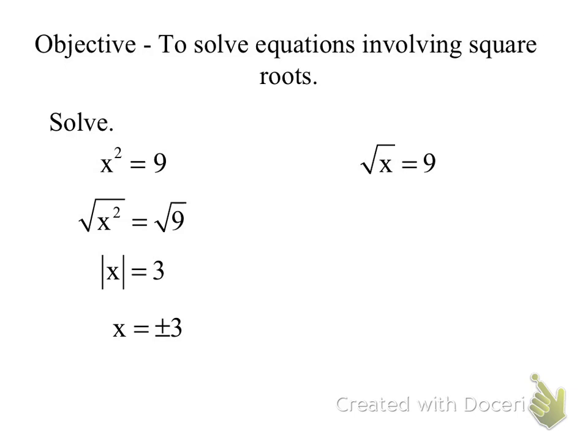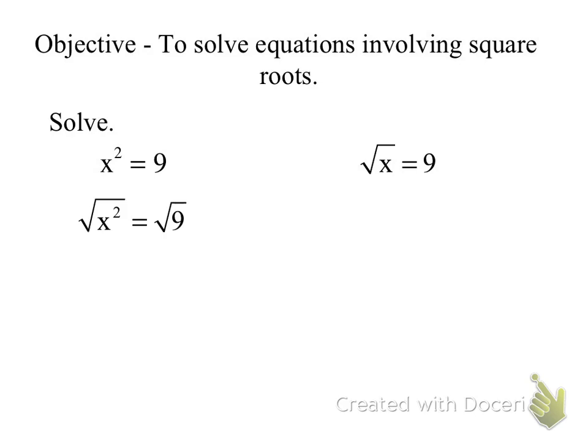Let me go back over it. I see the square, so I do the opposite — take the root. The square root of x gives the absolute value of x. The square root of 9 is 3. To lose the absolute value, I have to set the opposite side equal to both the positive and negative values.